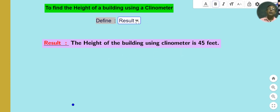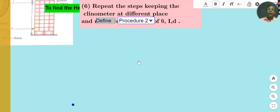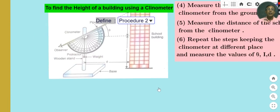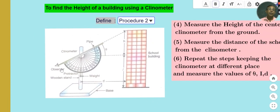That is your math lab activity. We have to arrange the clinometer in such a way that we can see from the eyesight to the top of the building, so that we can measure the angle of elevation through this. This is your activity.